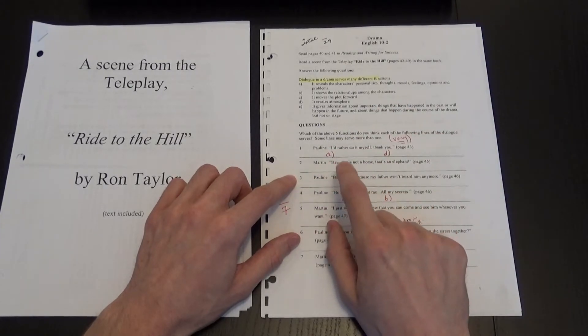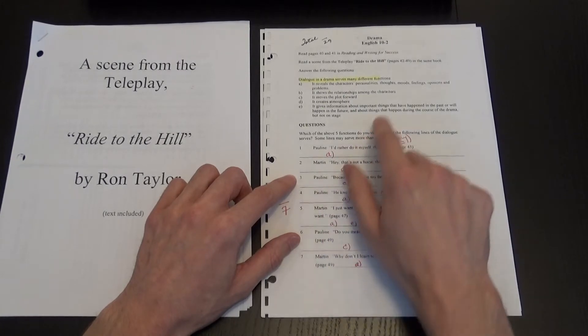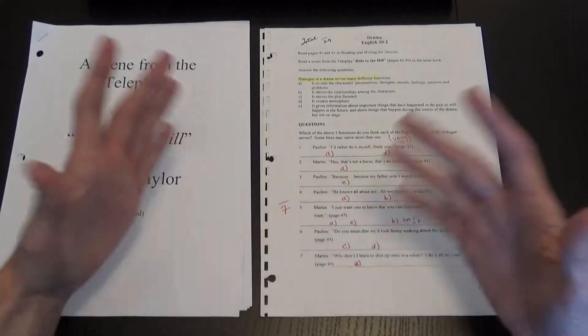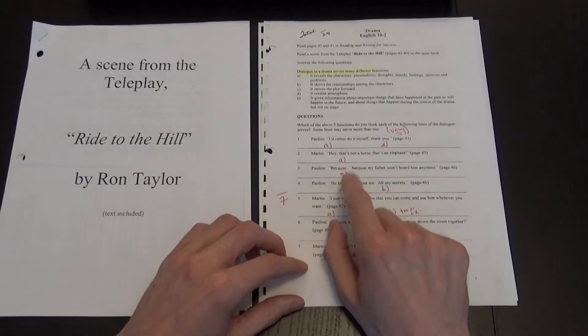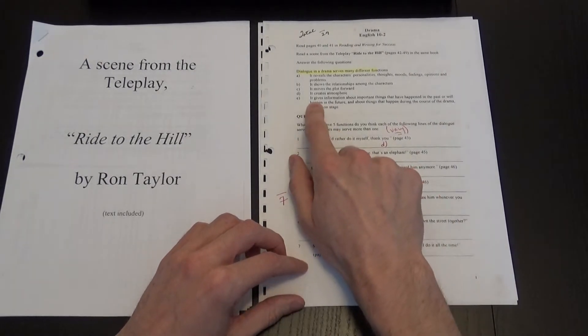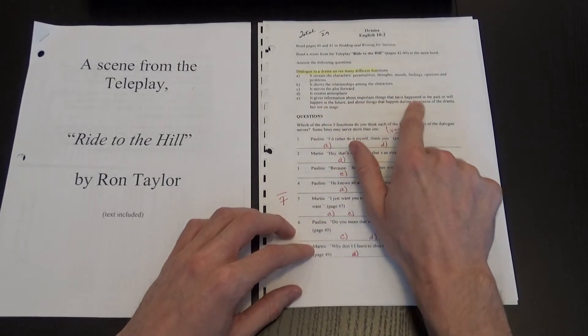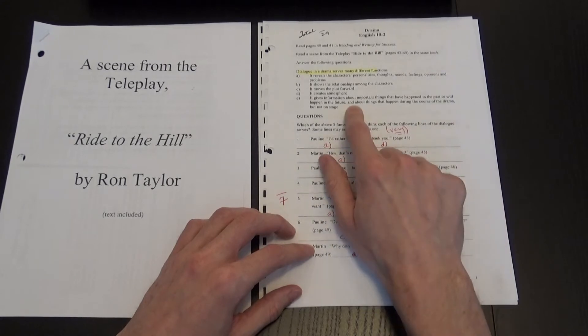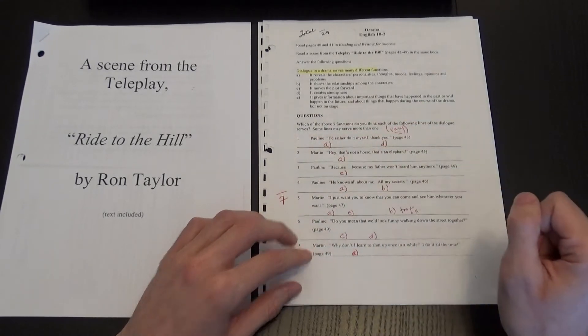And number two would be A, 'hey that's not a horse, that's an elephant.' So it reveals that that's a pretty big horse. Then number three, it's E, so it gives information about important things that have happened in the past or will happen in the future, and about things that happen during the course of the drama, but not on stage.